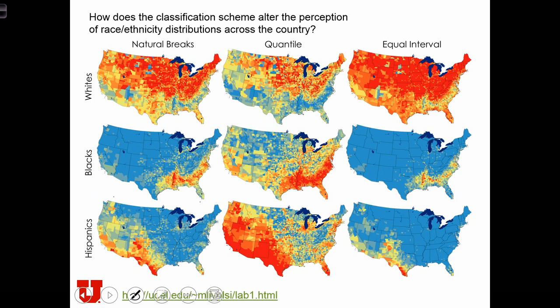On this slide, I'm showing you maps of racial composition in counties across the United States. The nine maps correspond to different races and different techniques for quantifying the race data. Across the three columns, we have natural breaks, quantile, and equal interval classification schemes. And down the three rows, we have maps showing the percentage of people who are white, the percentage of people who are black, and the percentage of people who responded as Hispanics in the U.S. Census.